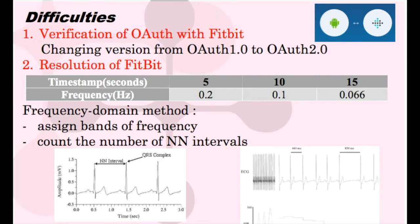During the process, I found some restrictions caused by the Fitbit that affect my design. After some testing of the device, I find that Fitbit takes samples at three timestamps — 5 seconds, 10 seconds, and 15 seconds — randomly. This frequency is not low enough for us to detect the heart situation by the frequency domain method.